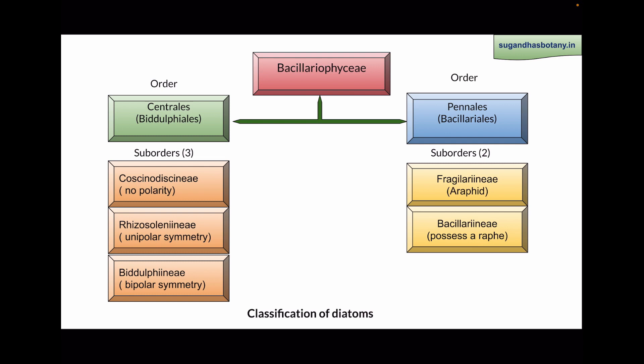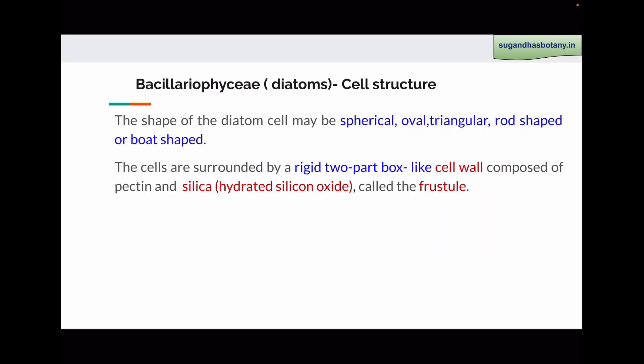Raphe is a slit in the diatom cell which helps in the gliding movement. Diatoms have spherical, oval, triangular, rod-shaped, or board-shaped cells. Diatoms may be unicellular, or the cells may be joined together with the help of mucilage forming a colony. The cells are peculiar in diatoms. They have a rigid, two-part, box-like or petri plate-like cell wall composed of pectin.